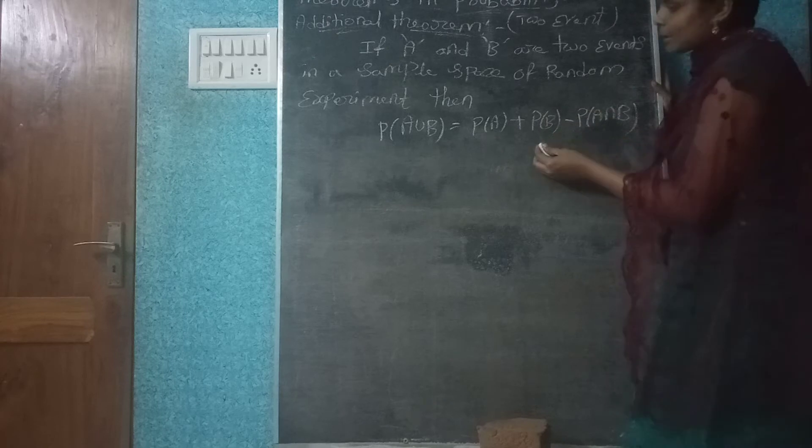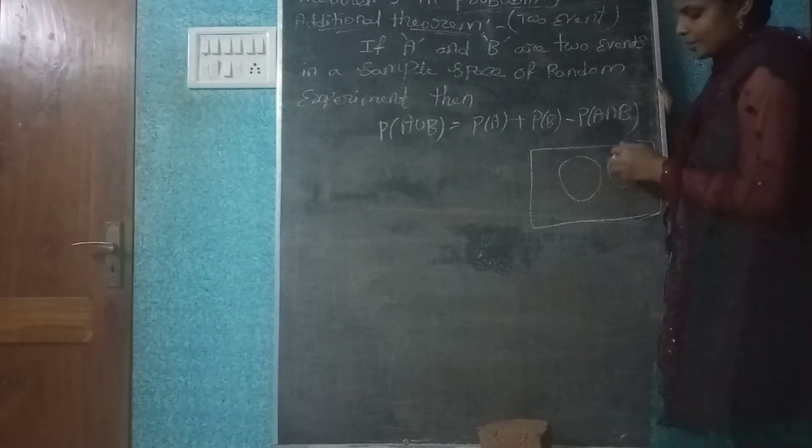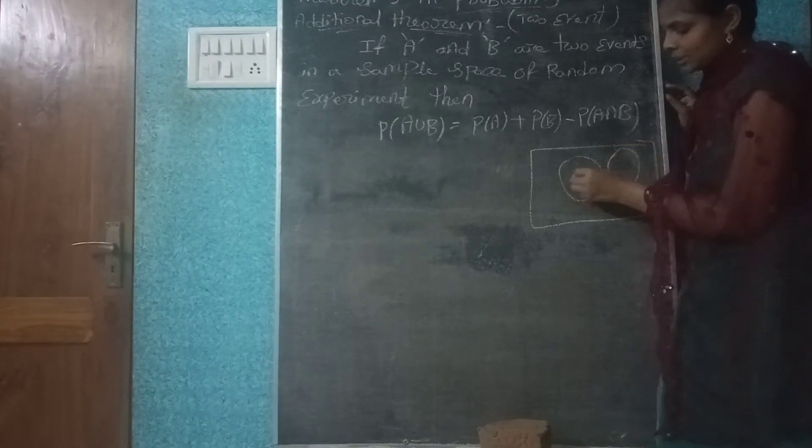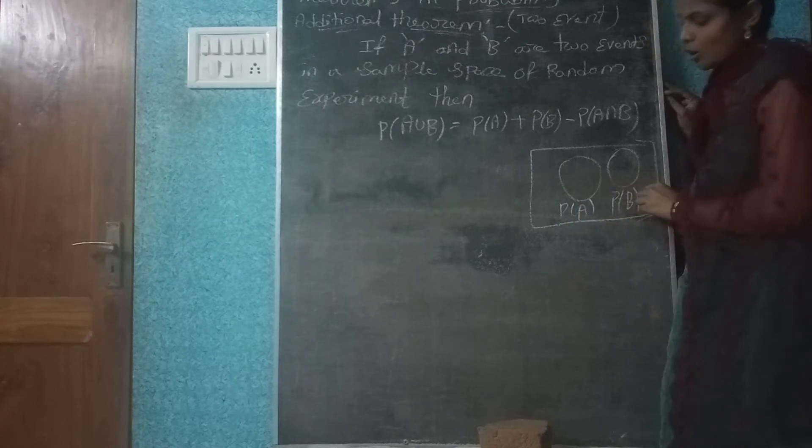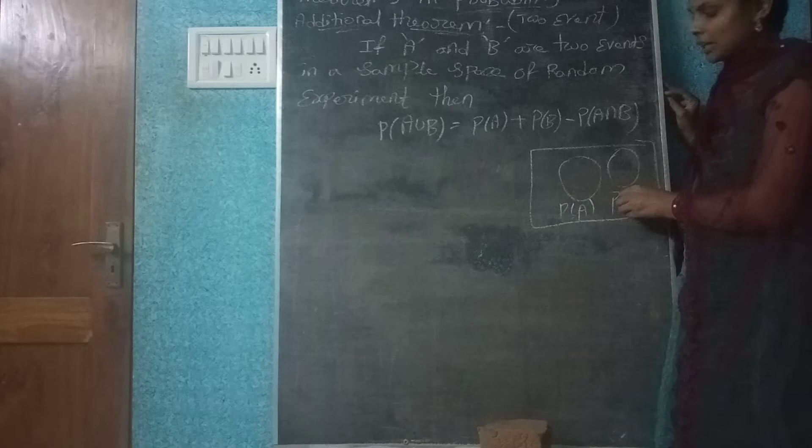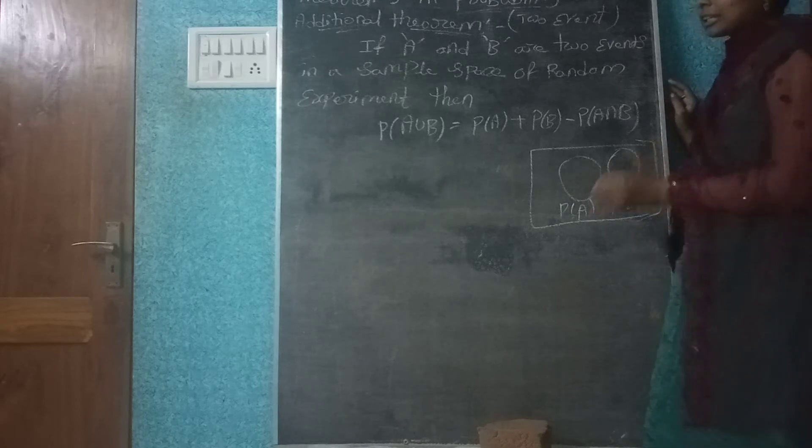We have two events in a sample space. So what will be the condition? To see the Venn diagram. If we go to the Venn diagram, we can use P of A and P of B instead to give them a proof.